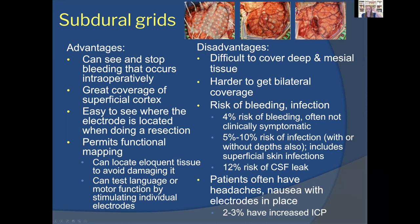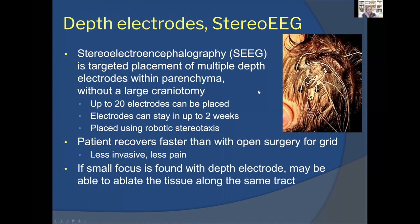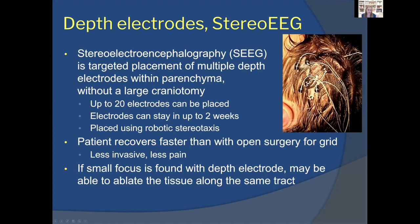If we don't need to map the brain surface, we can instead use depth electrodes via stereotactic EEG — stereo EEG. Thin 1.1mm electrodes are placed down into the hippocampus or deep brain structures, providing excellent deep coverage throughout the temporal lobe. This is highly targeted, GPS-accurate to a fraction of a millimeter, placed within the brain parenchyma without a craniotomy. Through a very small scalp incision, a 2.5mm skull opening is drilled, small bolts are screwed in, and the electrode is slid through. More than 20 electrodes can be placed and monitored for about two weeks, using robotic assistance for accuracy.